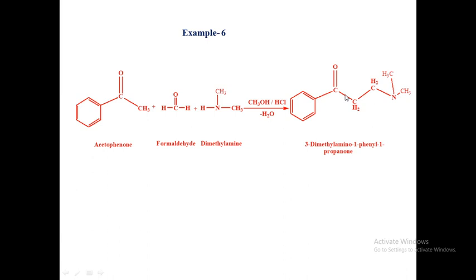Once again, repeating the definition: aliphatic or aromatic ketones containing an alpha-hydrogen atom react with formaldehyde and ammonia, or a primary amine, or a secondary amine, in the presence of methyl alcohol as a solvent and hydrochloric acid to form a beta-amino ketone. This reaction is called the Mannich reaction. Thank you.